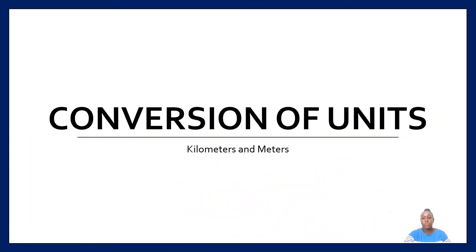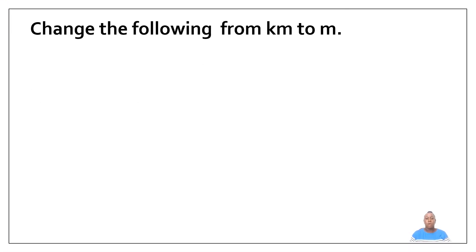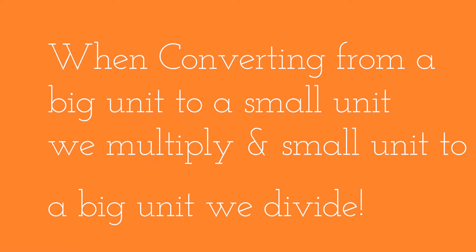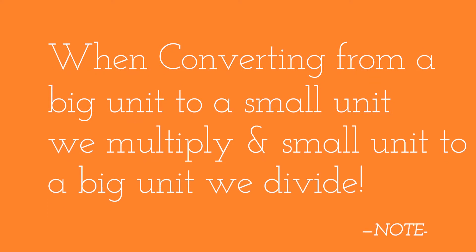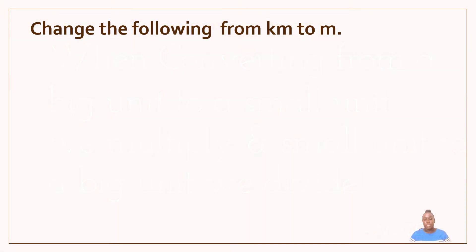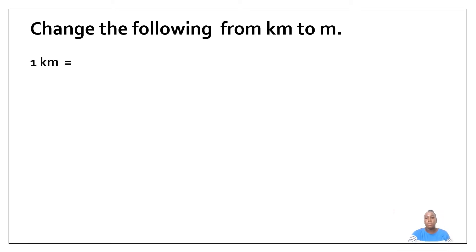Conversion of units. In this video we will be focusing on kilometers and meters. When you are converting from a big unit to a smaller unit we multiply, and when we are converting from a smaller unit to a big unit we divide. We would be converting from kilometers to meters, so we would be multiplying by one thousand.